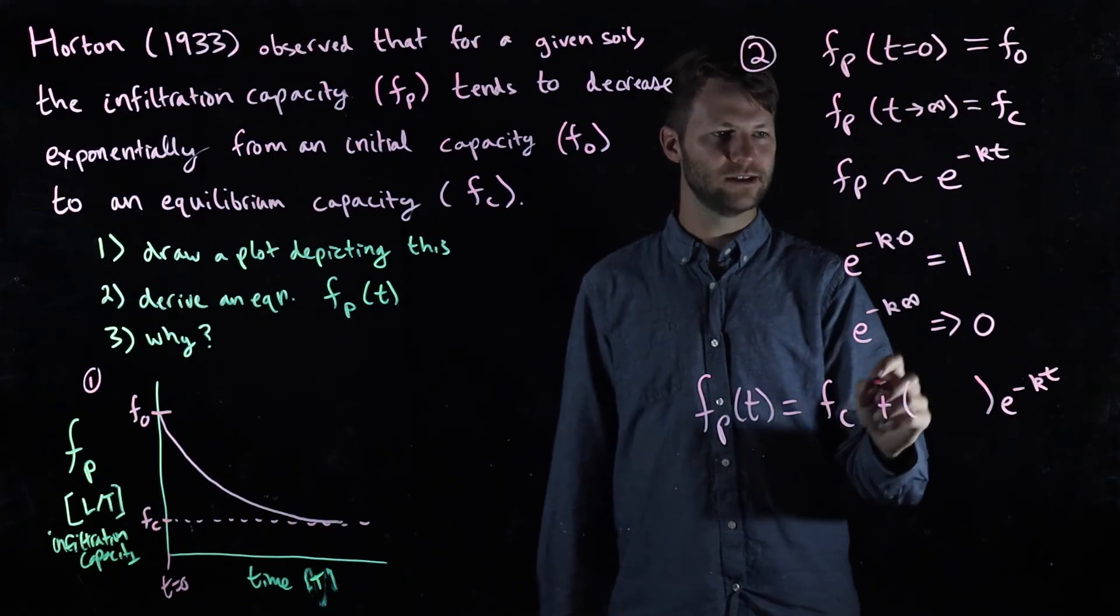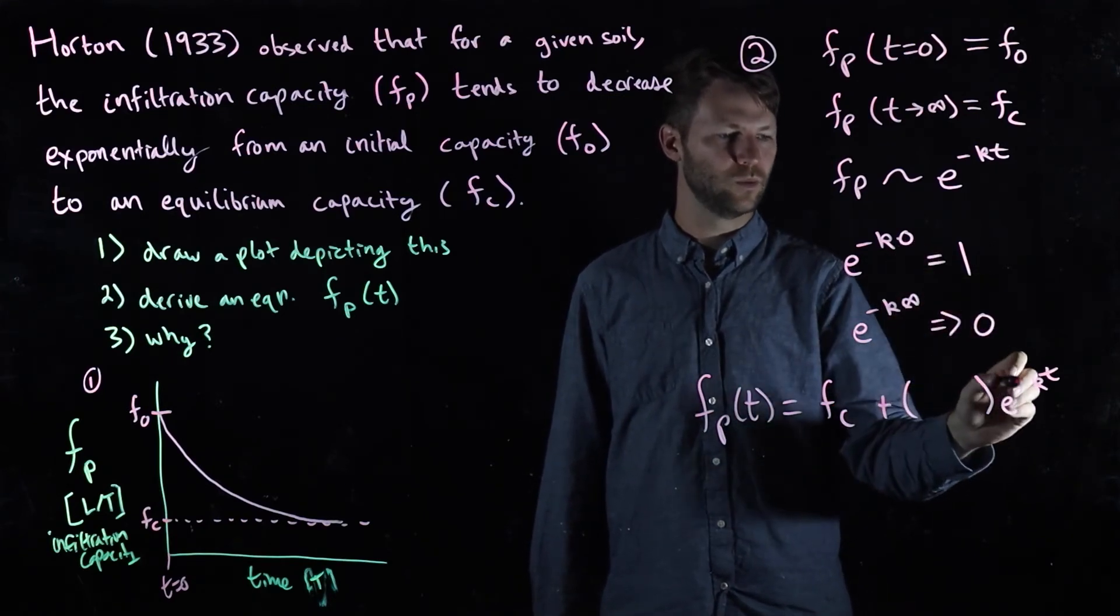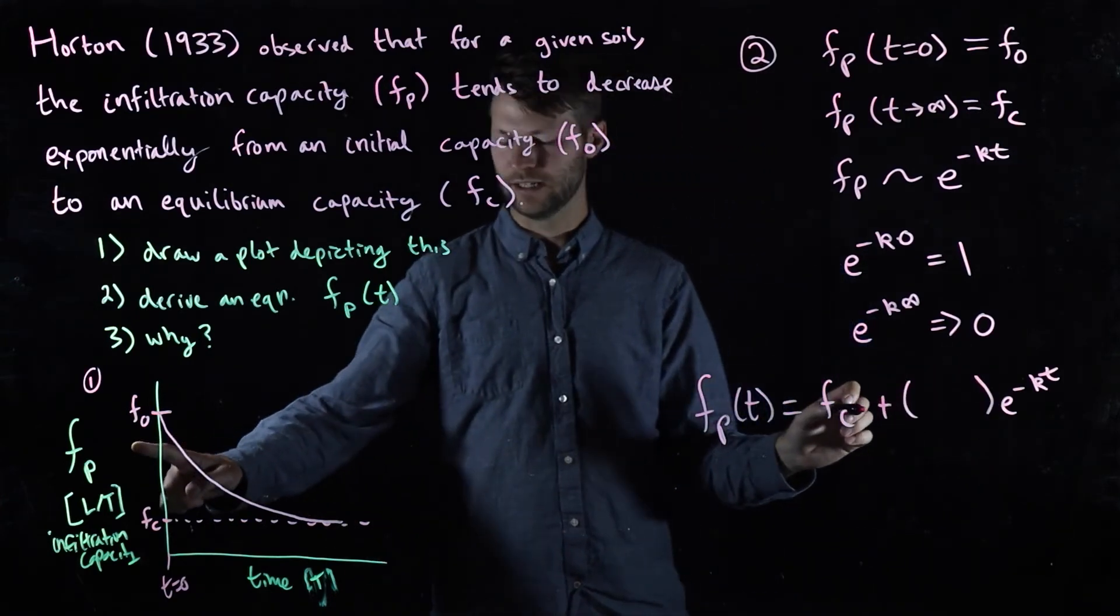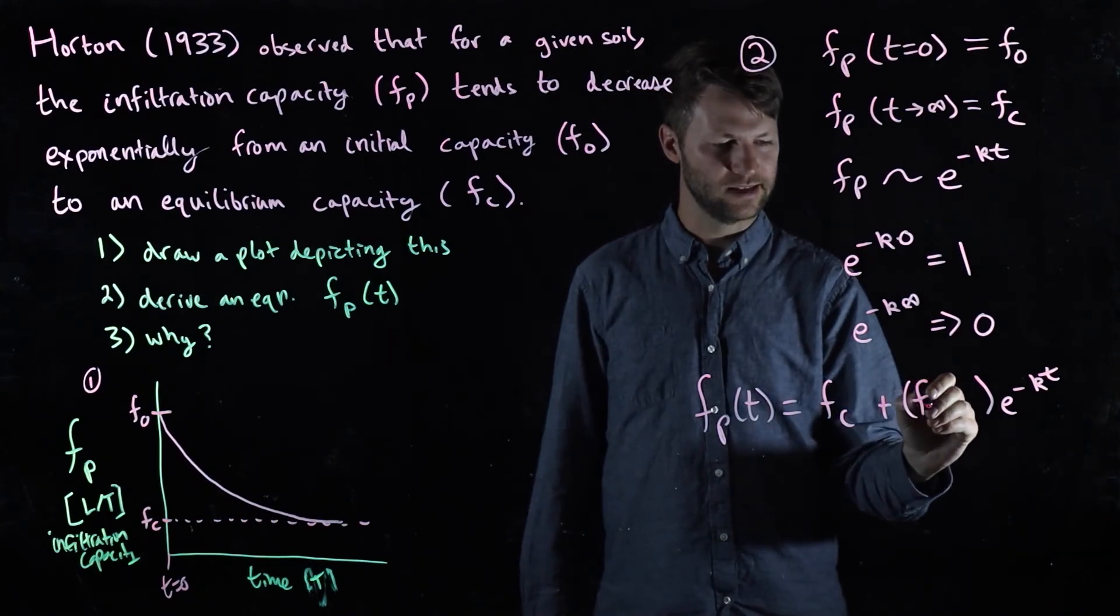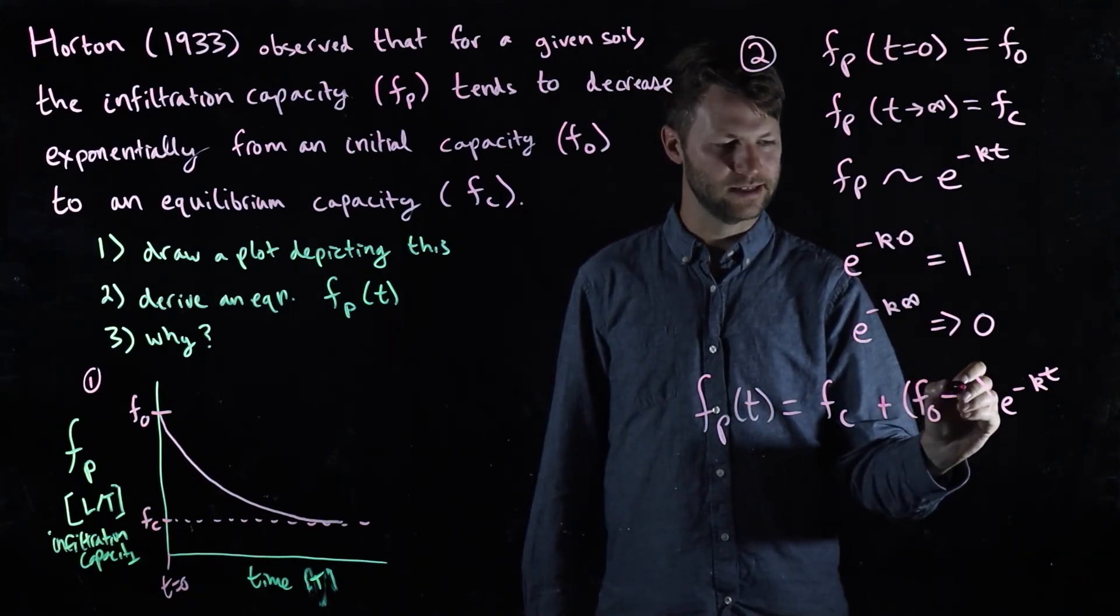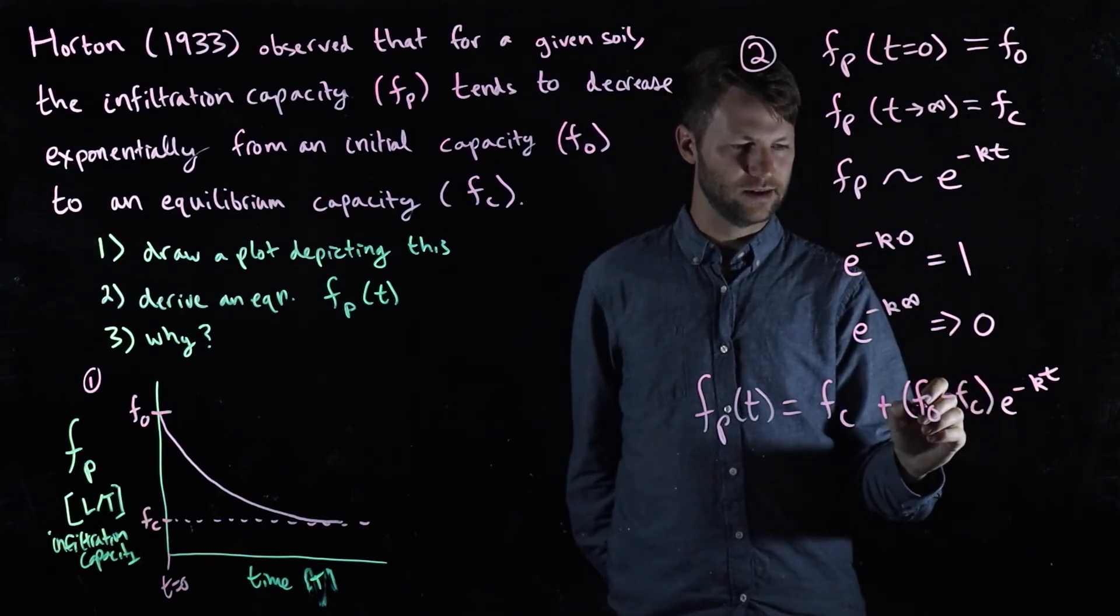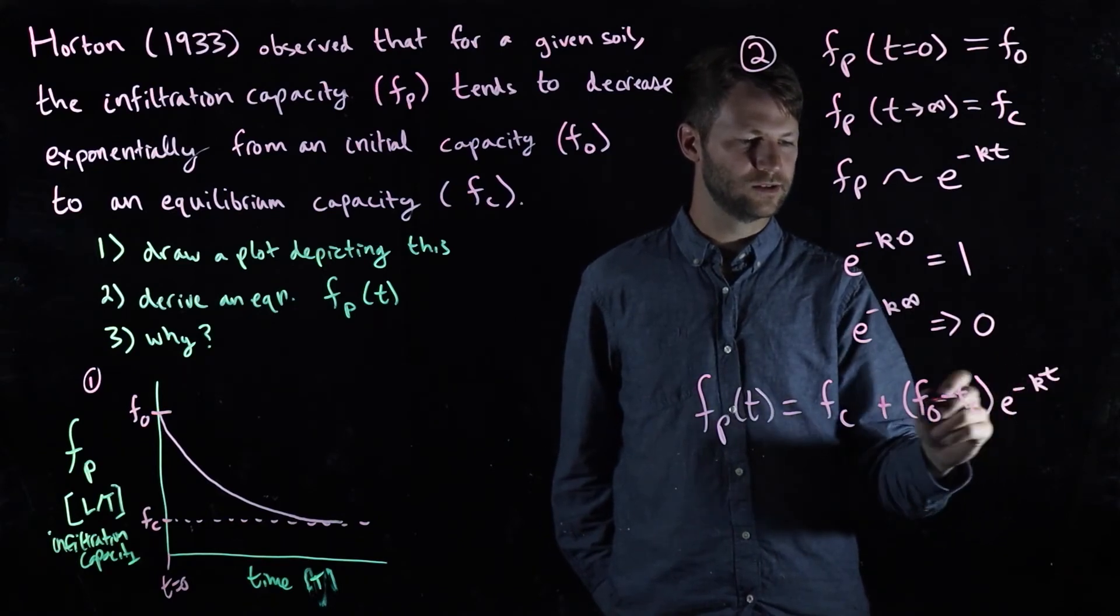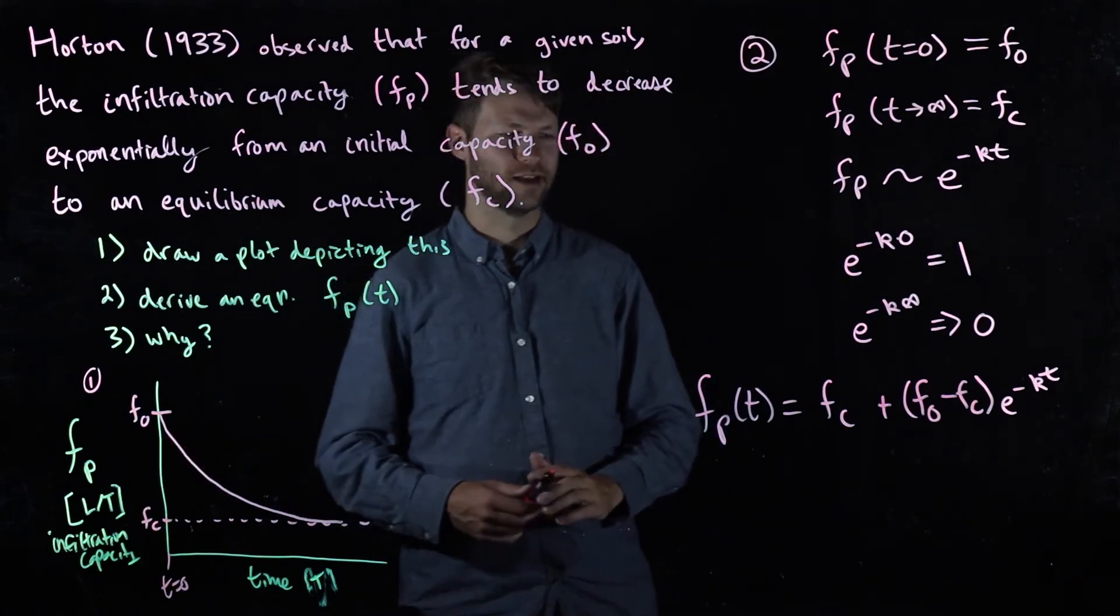What I need to do now is figure out at zero, when time is zero and this equals one, what do I need to put in here to make this entire expression equal to f_0. Well, I can just do something like this: (f_0 - f_c), and if I do that, at time equals zero this part's one, so you're just multiplying by one, you're going to cancel out those two f_c's and the equation is going to behave.